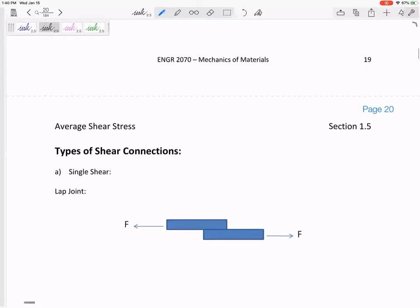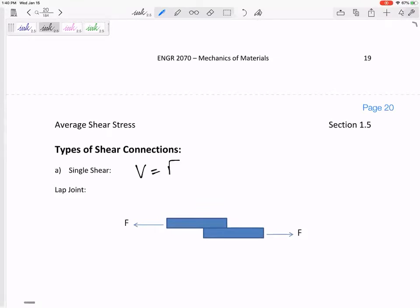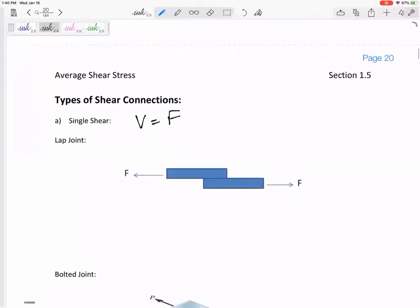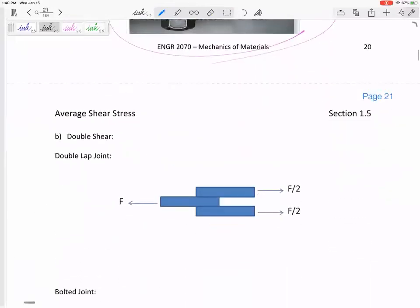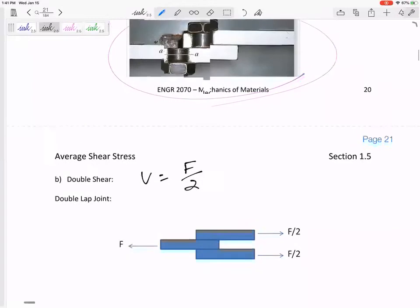For single shear, the V is just equal to the force that is being applied on both sides. Let's go to the next page. Double shear, the V is the force divided by two. So let's look at that.